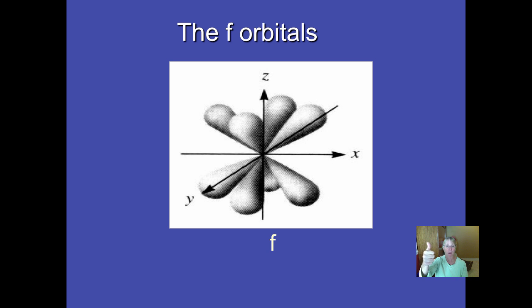So it's kind of cool. There's only one kind of sphere, one kind of S. It's a sphere. There are three kind of dumbbells, X, Y, and Z orientation. There are five types of double dumbbells and seven types of F orbitals. And notice they go up by odd numbers. One, three, five, seven.